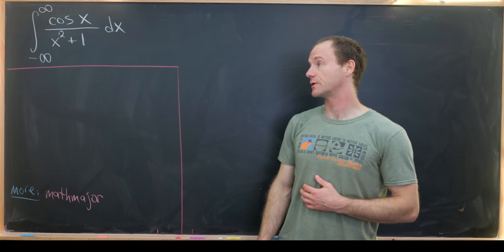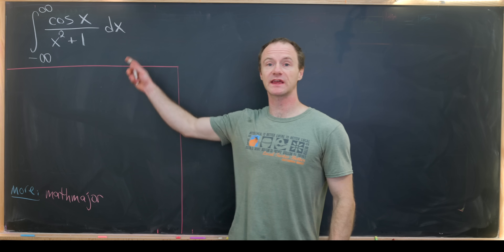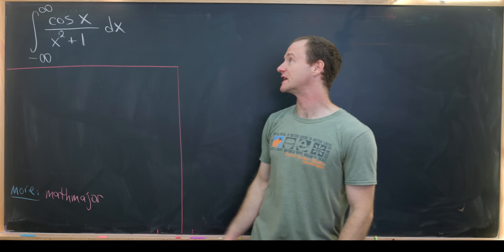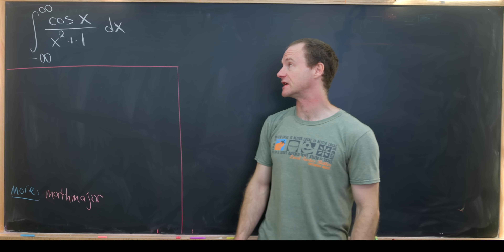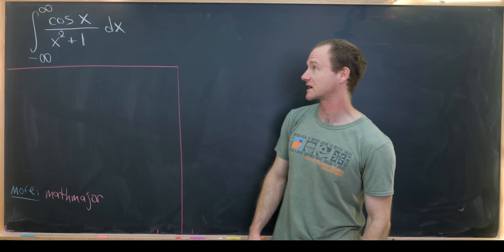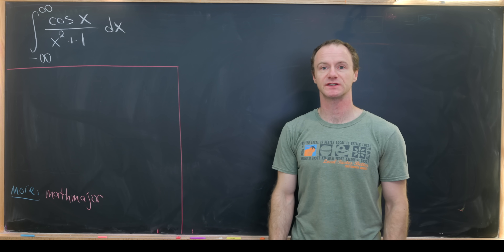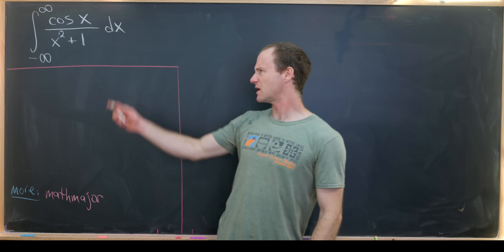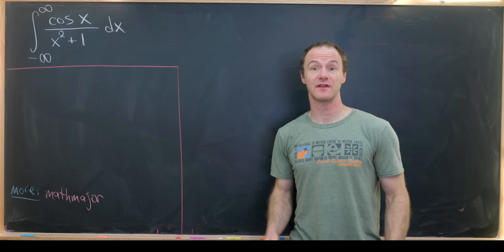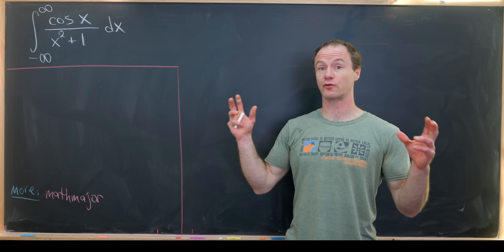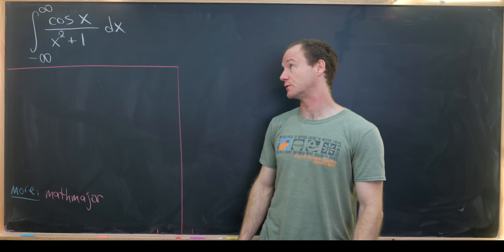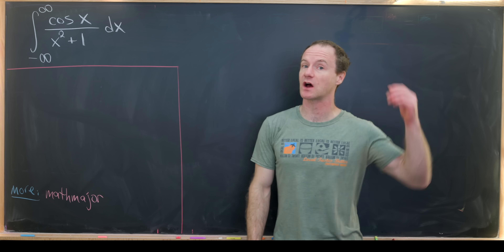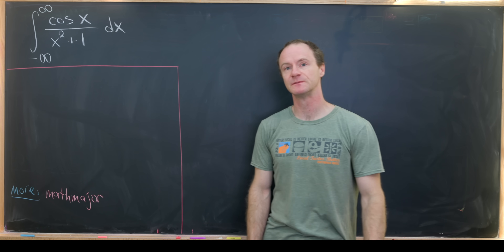Today I've got a nice integral for you. We're going to calculate the integral from minus infinity to infinity of cosine x over x squared plus one. Calculating this using methods only with real numbers would be quite complicated, so we're going to use complex analytic methods.